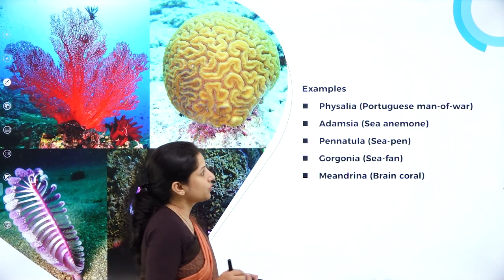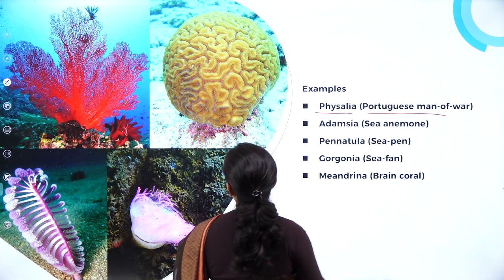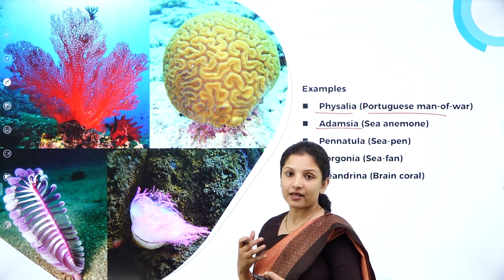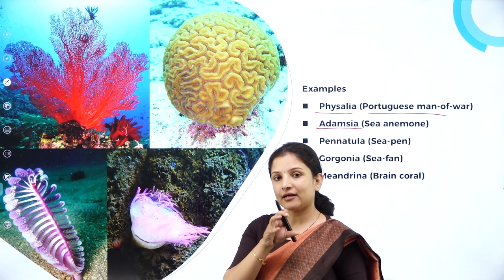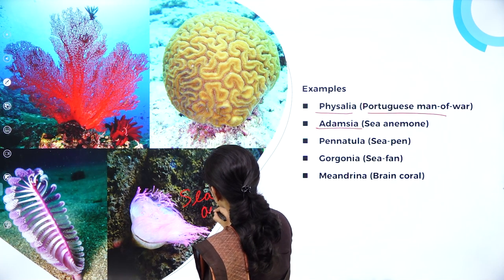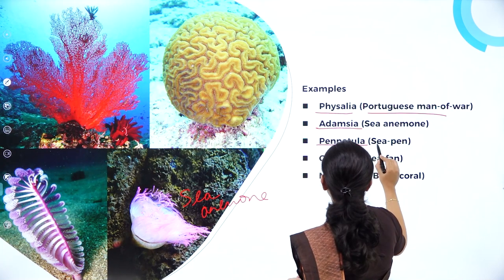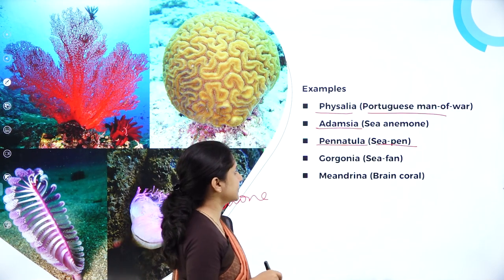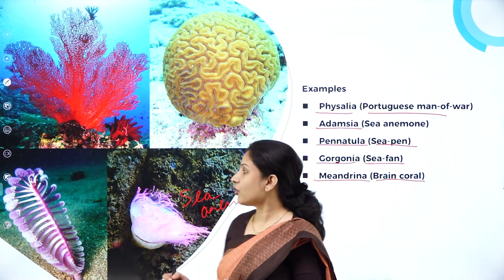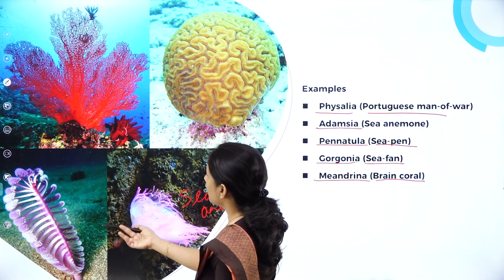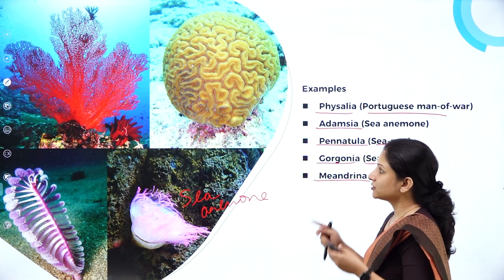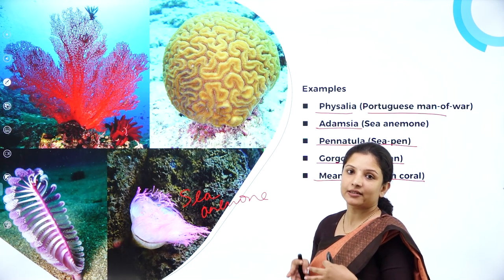Some examples of Coelenterata or nidarians: Physalia, called the Portuguese man of war; Adamsia, called sea anemone — the organism that lives with clownfish in a mutual relationship; Pennatula, called sea pen, which looks exactly like a pen; Gorgonia, called sea fan, which looks like a fan; and Meandrina, called brain coral because it looks like a brain. All these are different examples under phylum Coelenterata or nidarians.